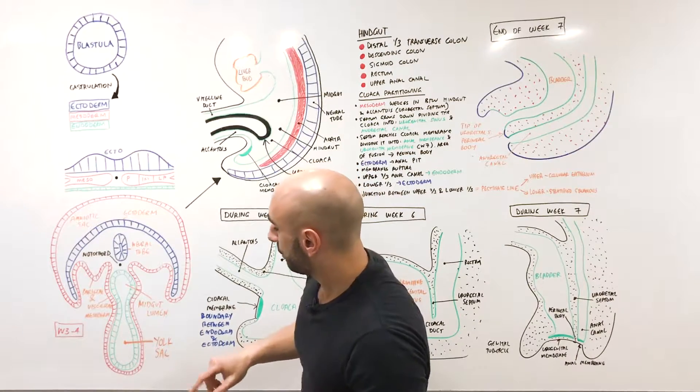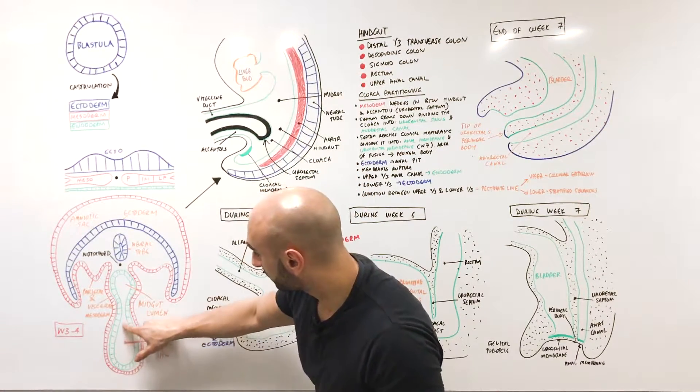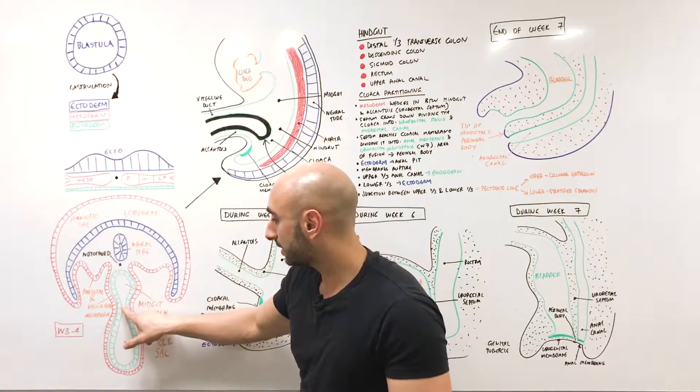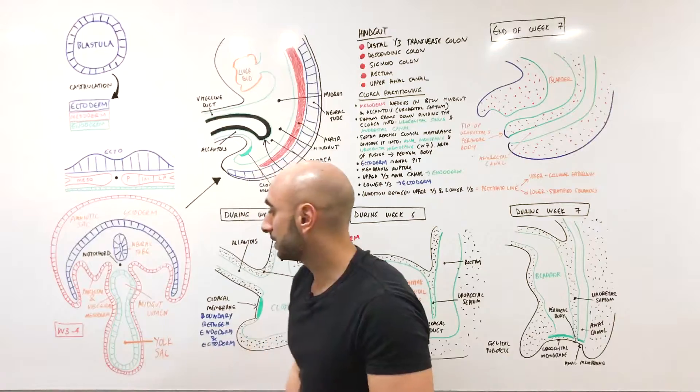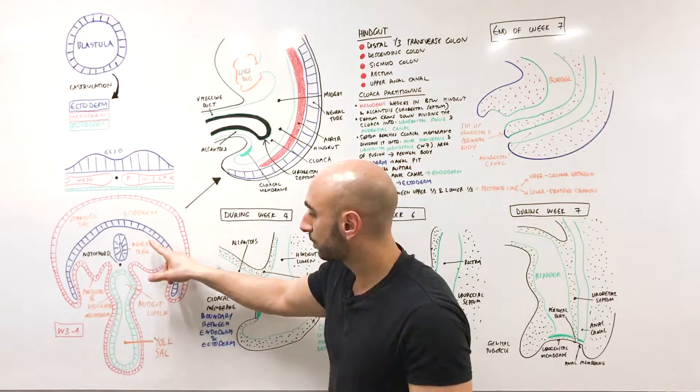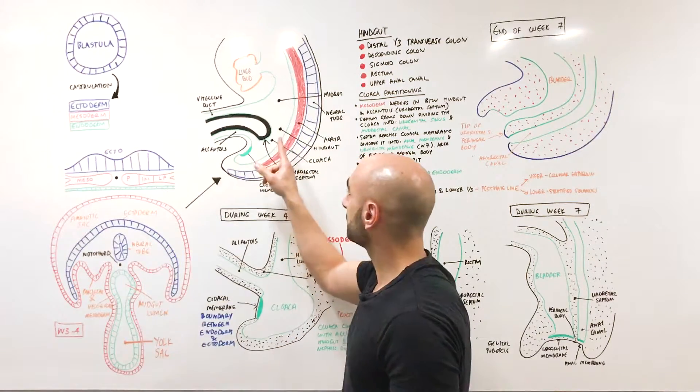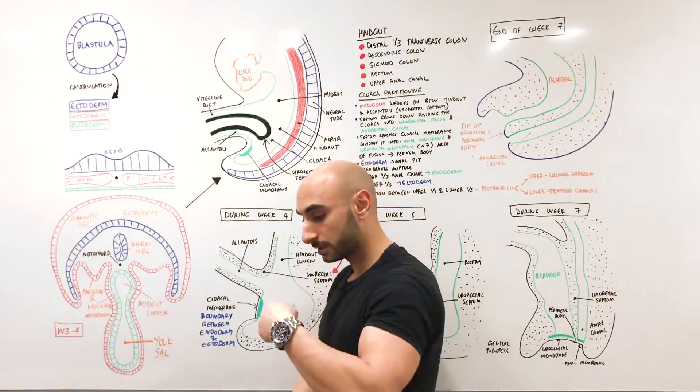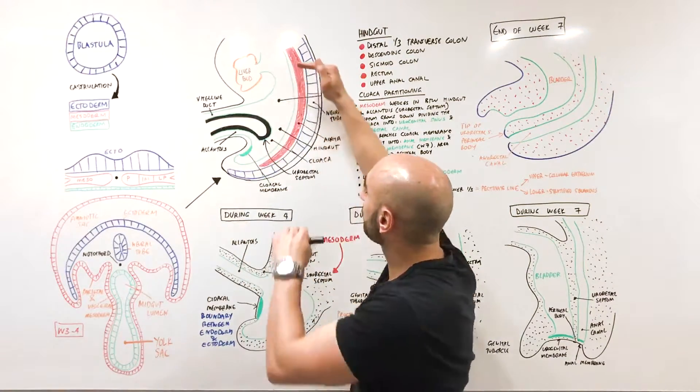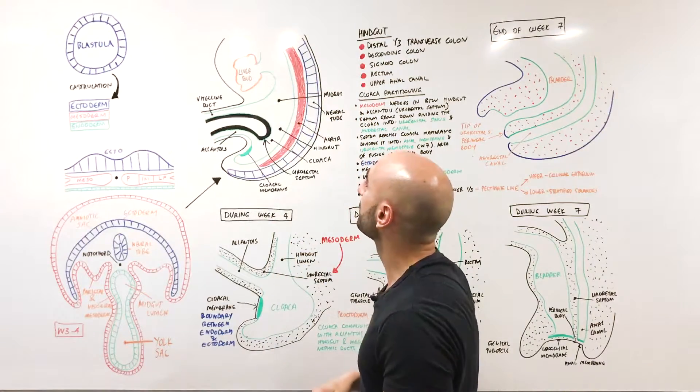We have the yolk sac here, and it's in connection with the midgut through a duct called the vitelline duct. We have the amniotic sac over here. This is week three to week four, similar with this section here—a cross section this way looking at it like this.